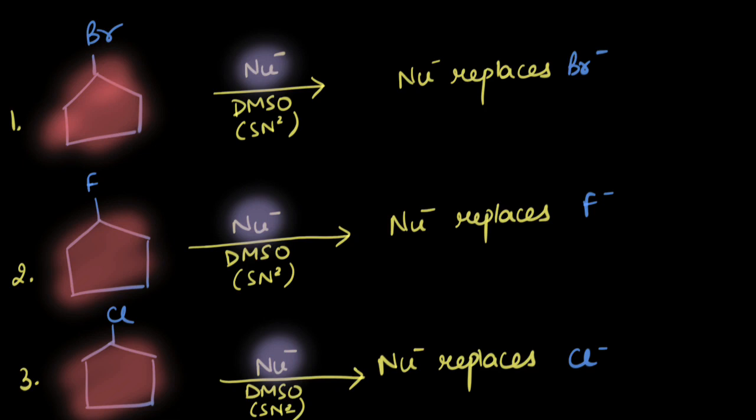First, we look at the atom that has the charge. If the atoms are different, we compare them based on size or electronegativity. If the atom containing the charge is the same in each case, then we consider resonance, inductive effect, and so on. Here, we need to compare the bromide ion, fluoride ion, and chloride ion.